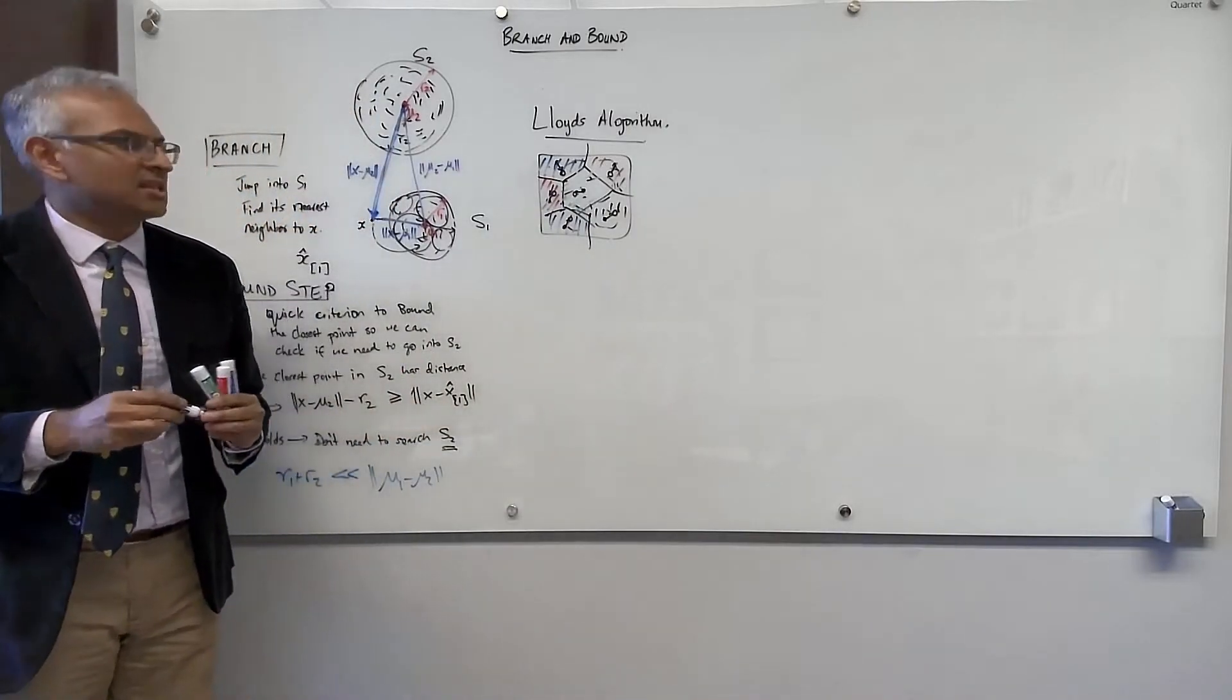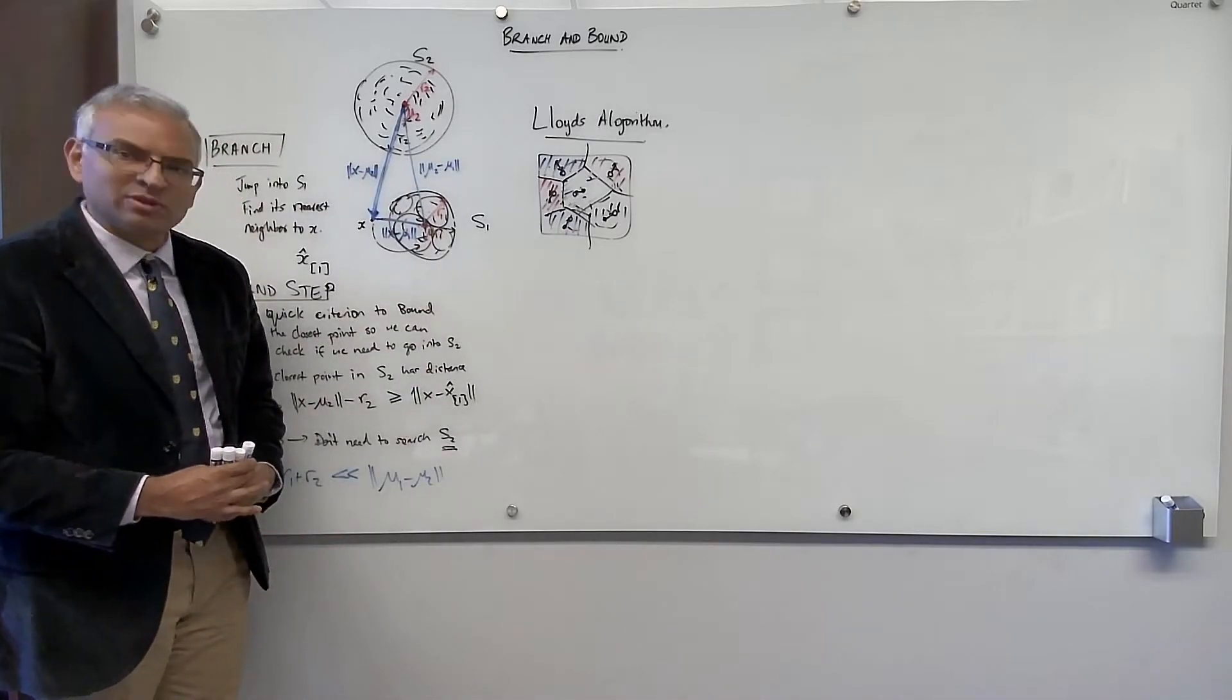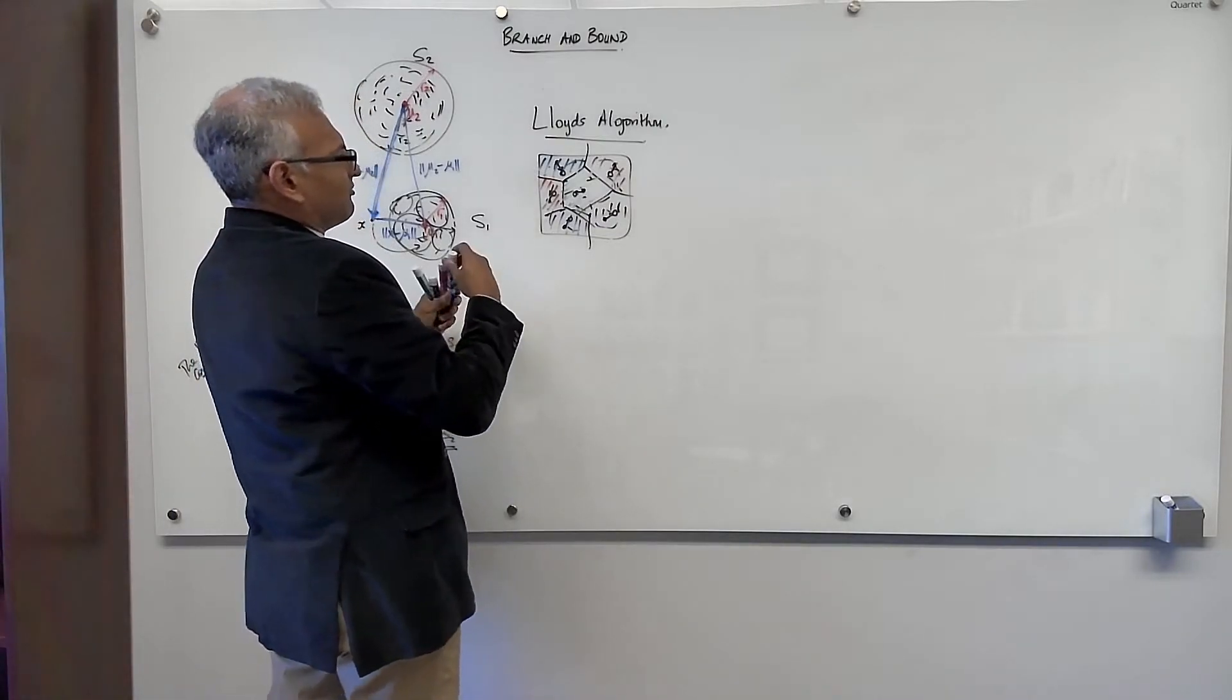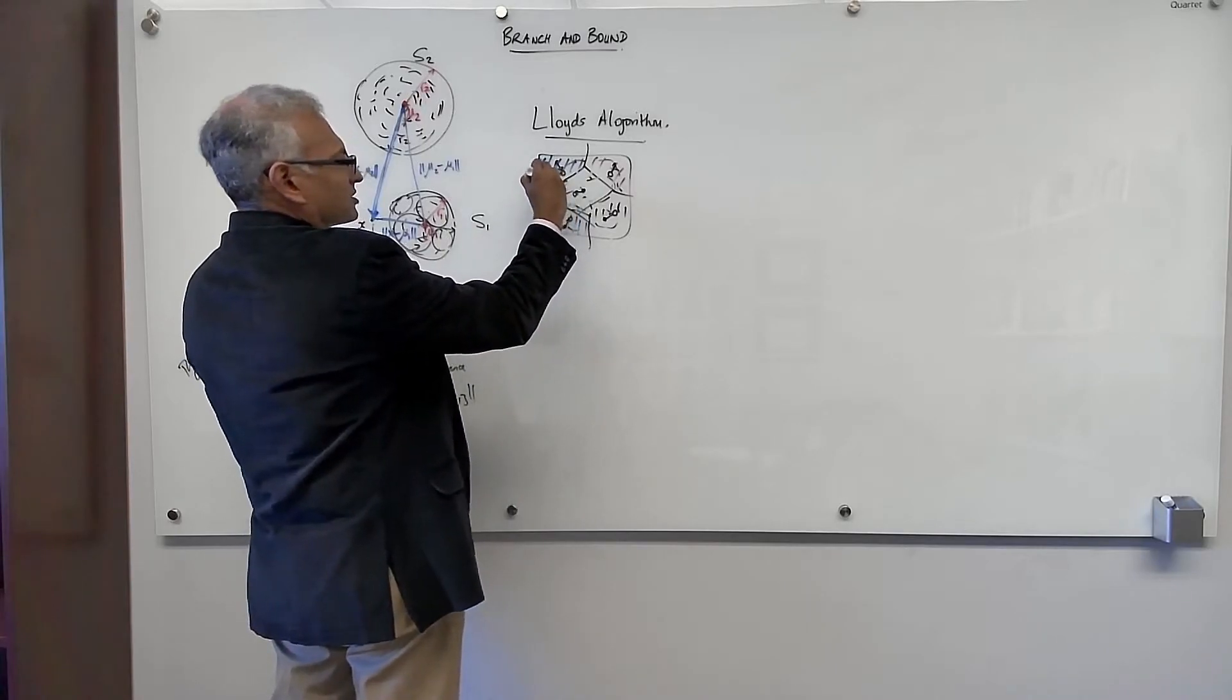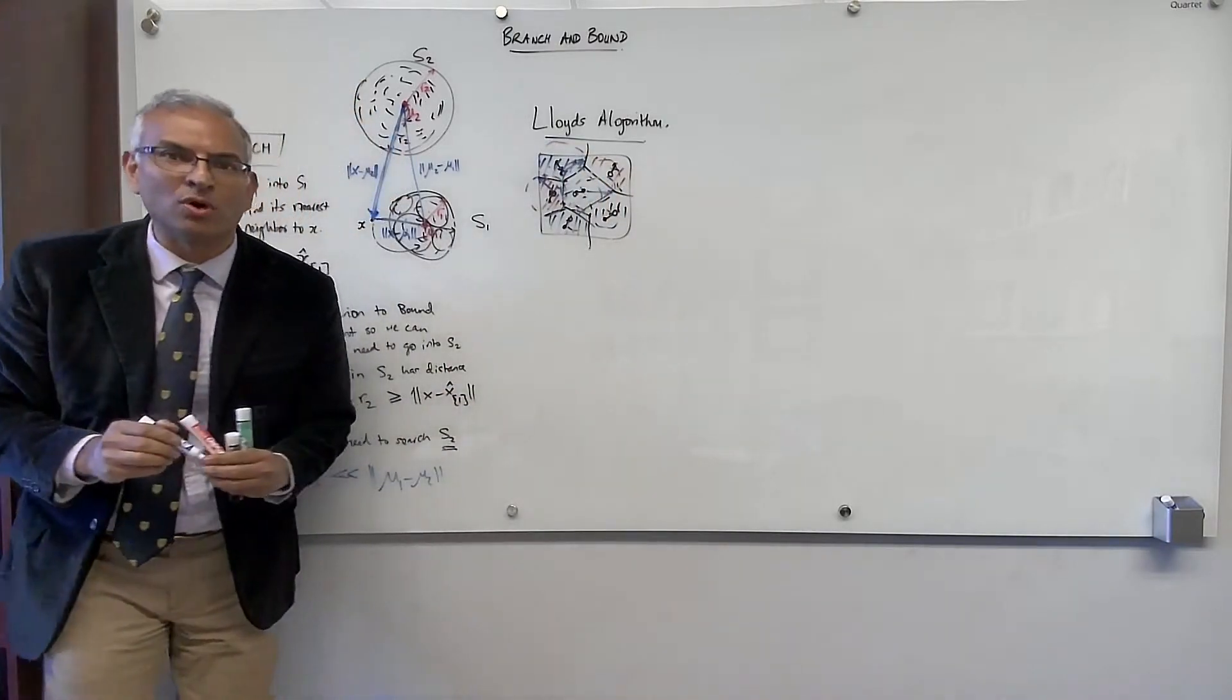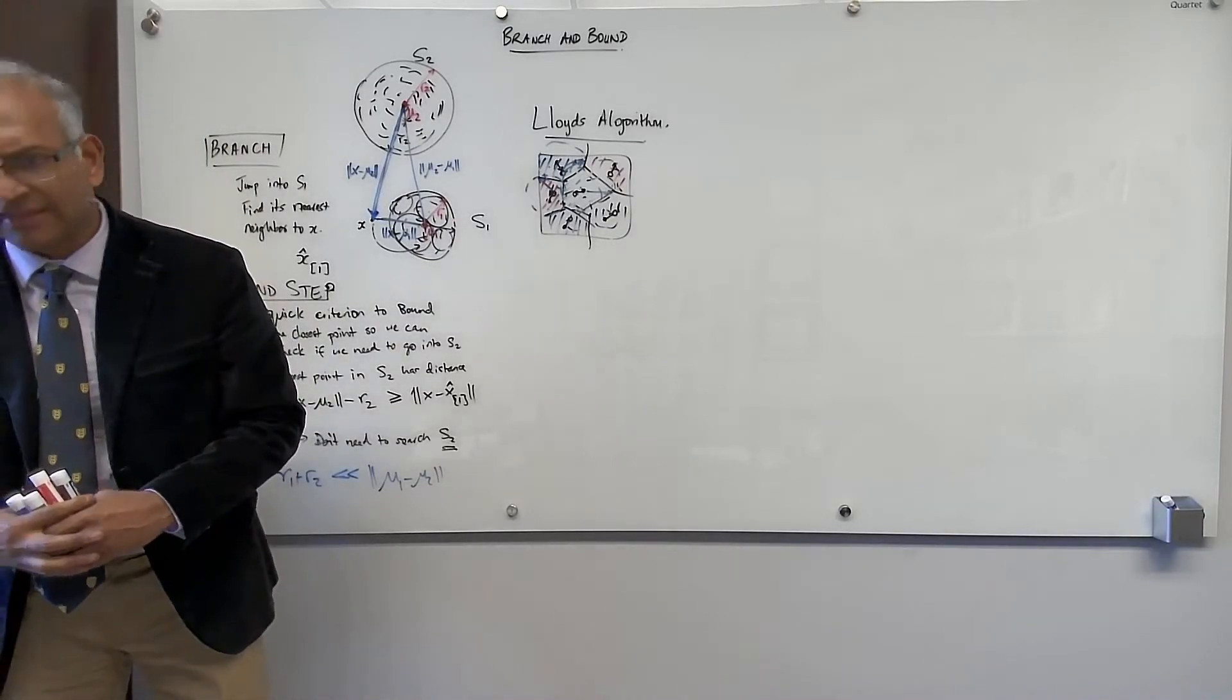So I'll update the centers and now I can recompute the Voronoi regions and recompute what data points are associated with each center and I can repeat. But more importantly what I'll do next is then I'll say, okay, now let me figure out what's the radius of each center. So I take the radius to the furthest point in my cluster. Okay, so now I can construct the radii and so on. That's called Lloyd's algorithm. So let me show you Lloyd's algorithm in action and then we'll summarize.